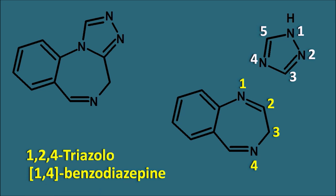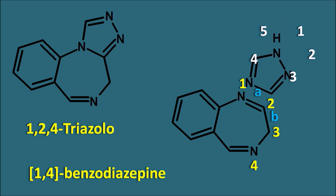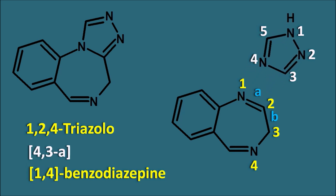Now, this 1,2,4-triazole is fused with the 1,4-benzodiazepine. The two rings are fused between the first and second carbon of the 1,4-benzodiazepine and the third and fourth position of the triazole ring system. Labeling the sides of the benzodiazepine as A-side, B-side and so on, the third and fourth position of the triazole is fused with the A-side, giving us 4,3-A. So this ring system is the 1,2,4-triazolo[4,3-A]-1,4-benzodiazepine.